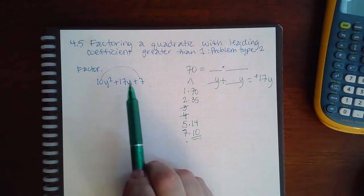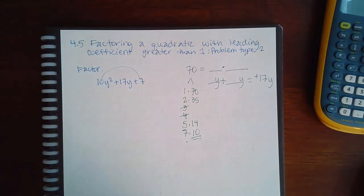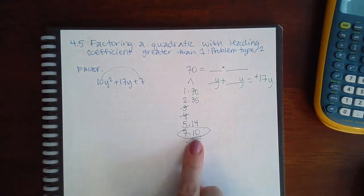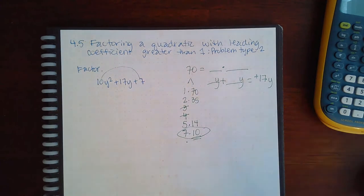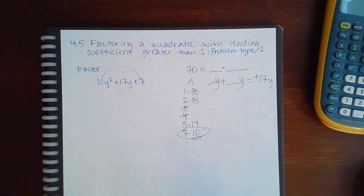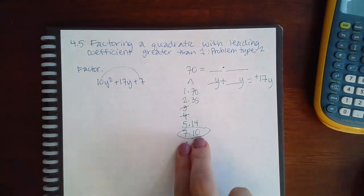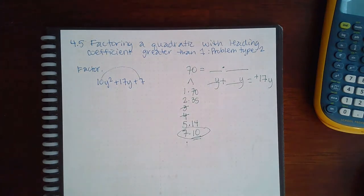Which of them add to give me 17? That would be these. Now if the numbers come to you naturally without having to do the whole list, then run with it. As long as it works, you've got them. But if you're in the dark as to what the numbers should be, then do this list because this gives you all of the possibilities that you could have.